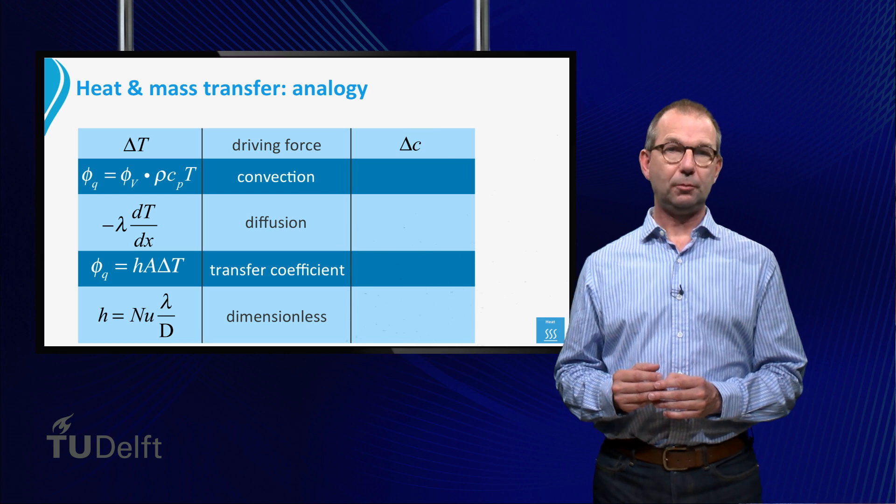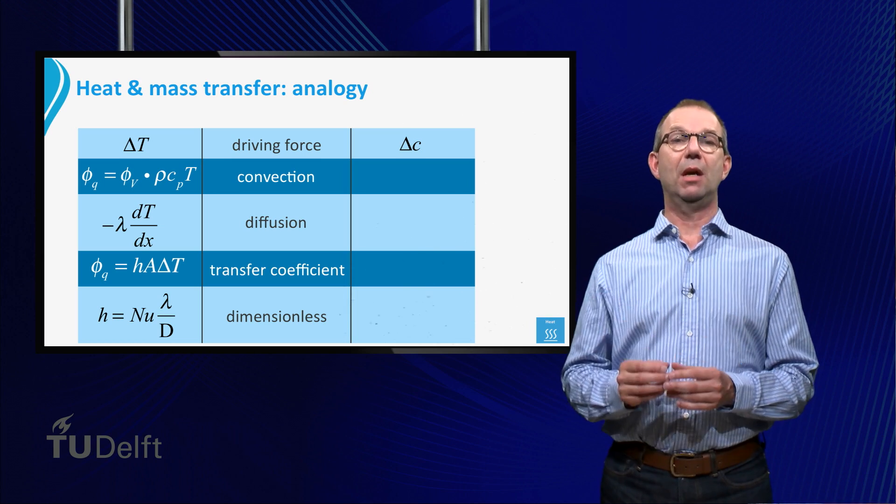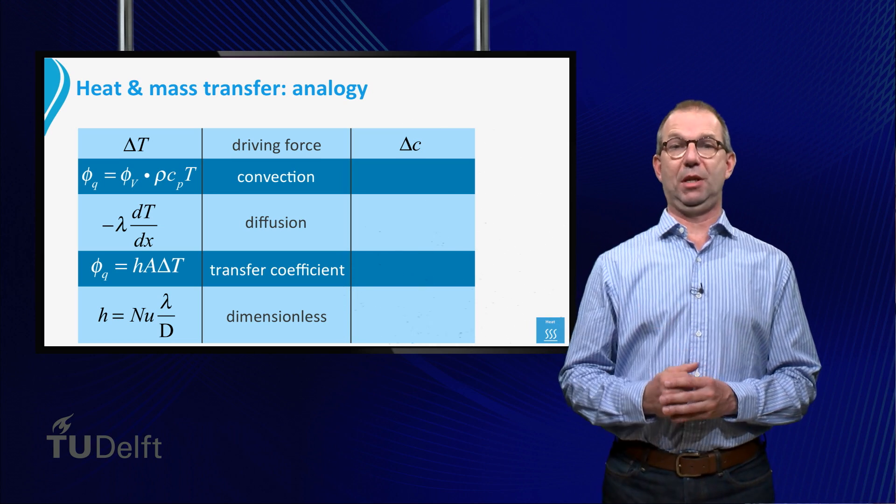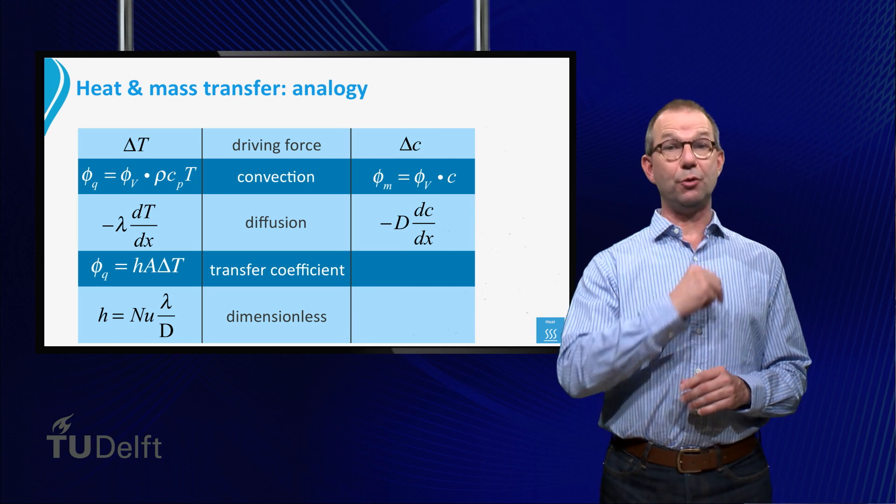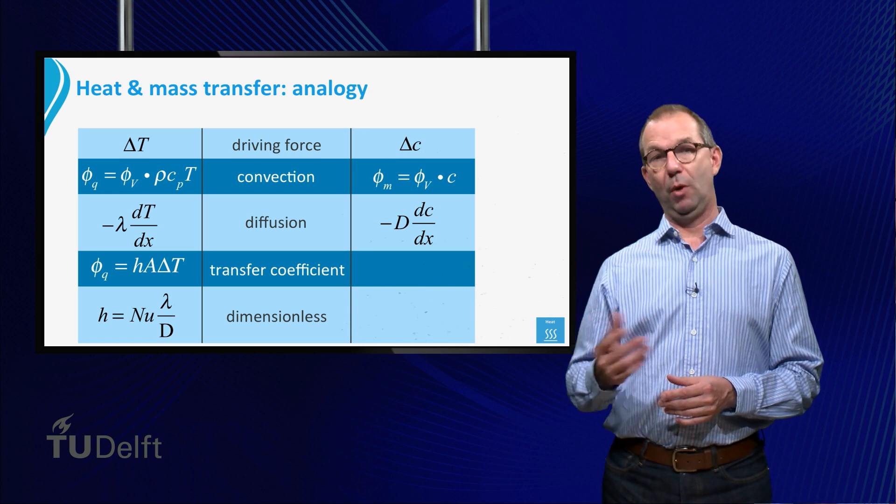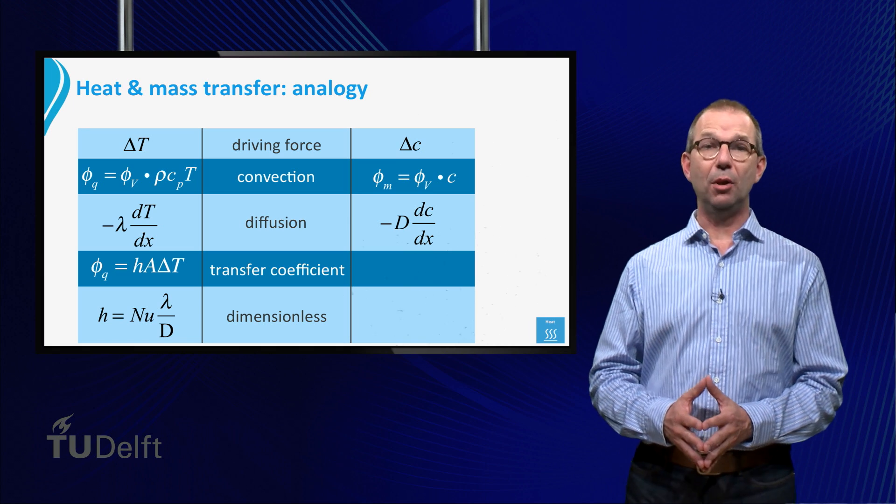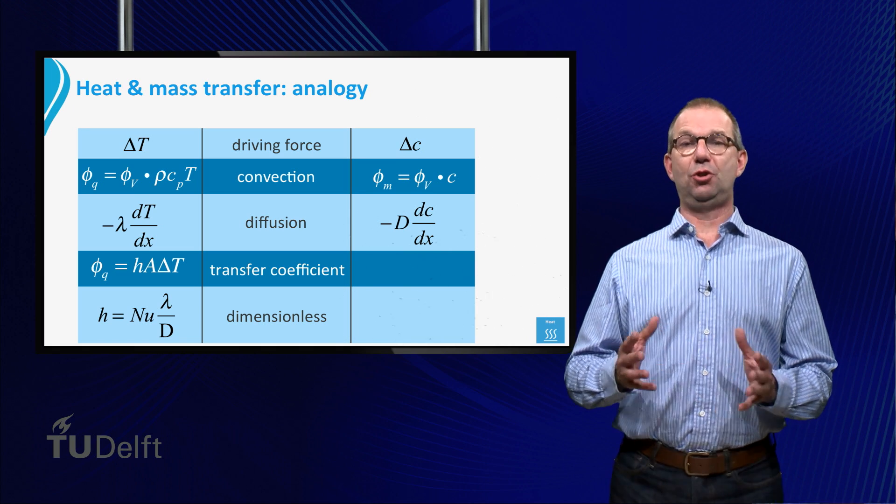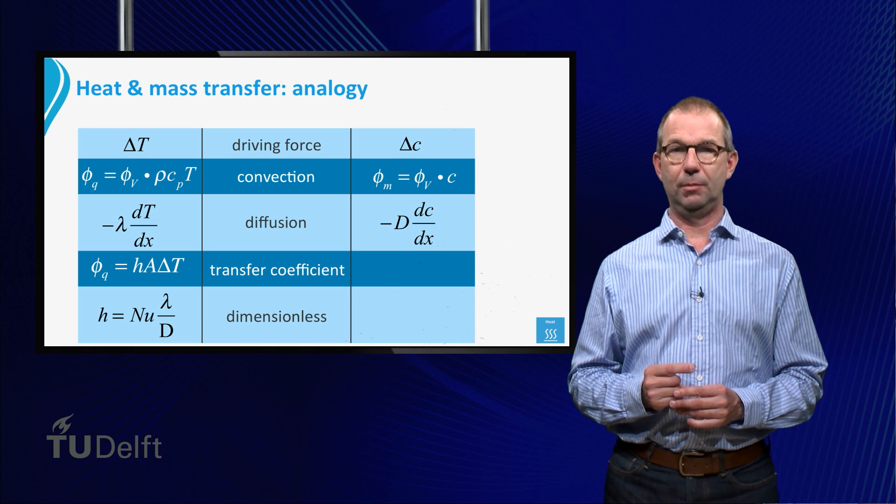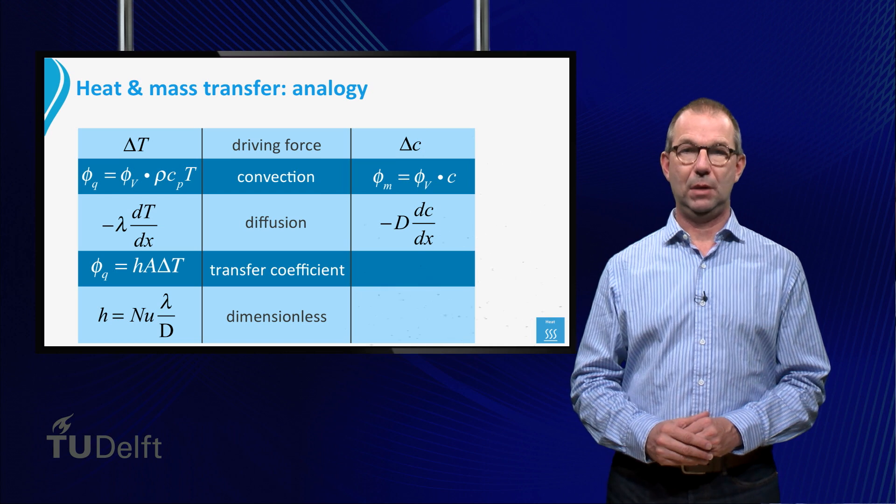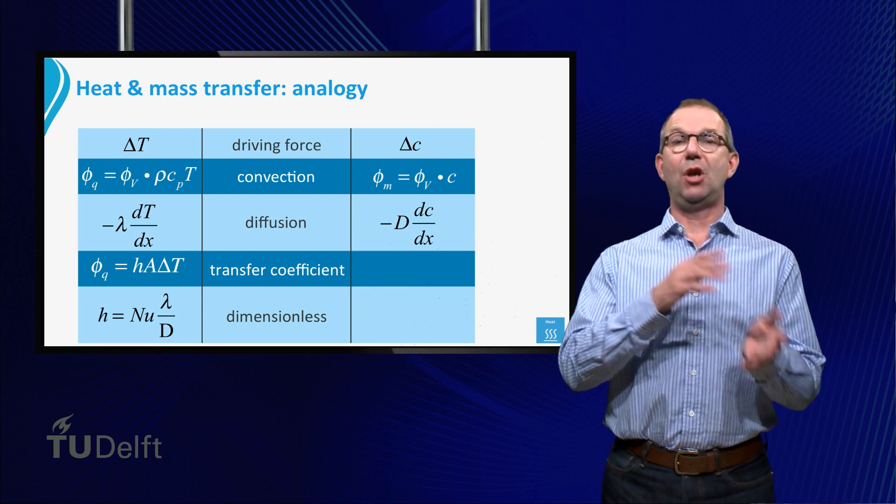Like with heat flow, we know from practice that the driving concentration difference in a species gives rise to transport of that species. And like with heat transfer, we have identified two ways of transport: diffusion, which is equivalent to heat conduction, and convective transport. In the table the general form of these two is given. If we compare them to the expressions we used for heat transfer, the similarity is striking. Convective heat transport is in both cases a volume flux times a concentration.